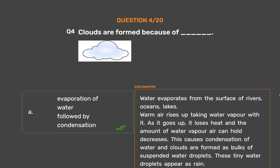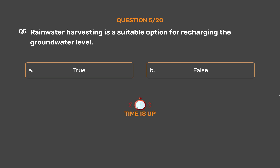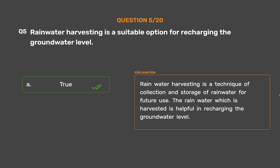These tiny water droplets appear as rain. Question number 5. Rainwater harvesting is a suitable option for recharging the groundwater level. Option A: True. Option B: False. The correct answer is True. Rainwater harvesting is a technique of collection and storage of rainwater for future use. The rainwater which is harvested is helpful in recharging the groundwater level.